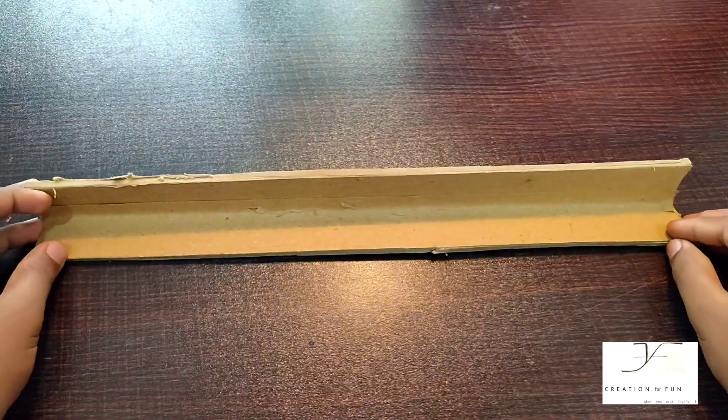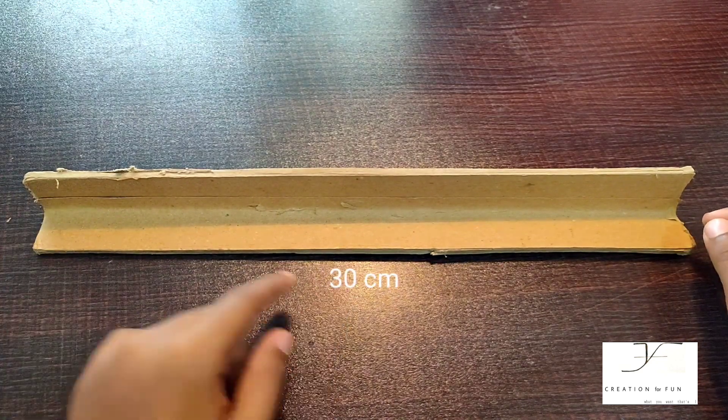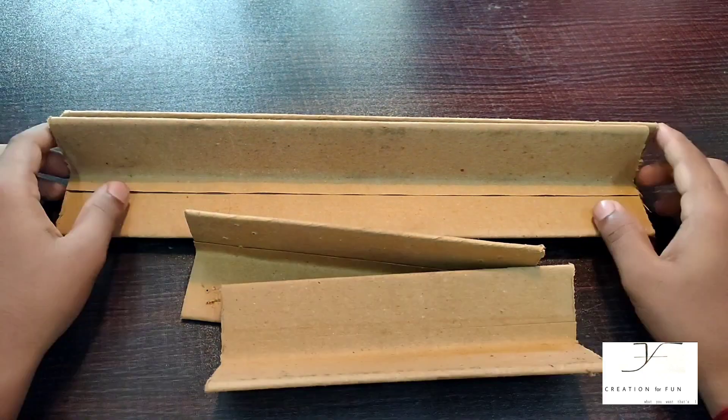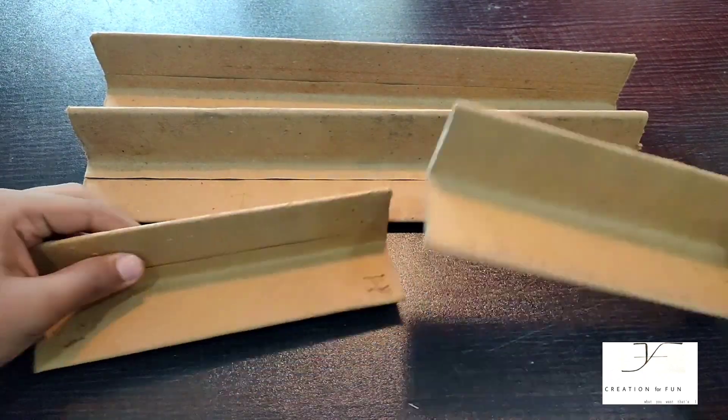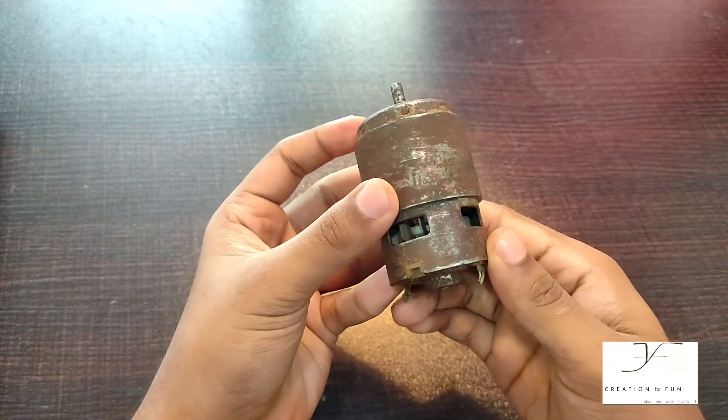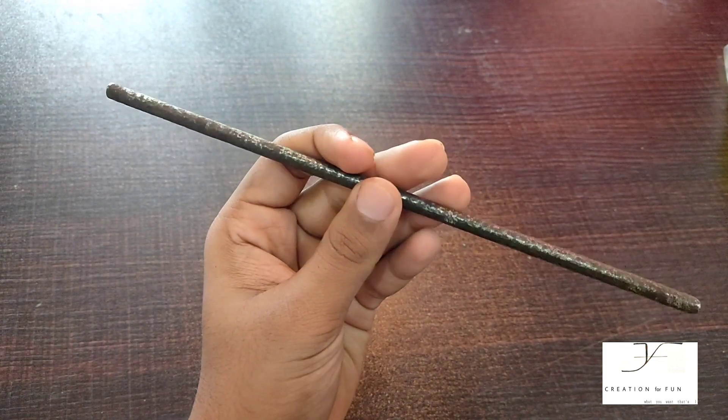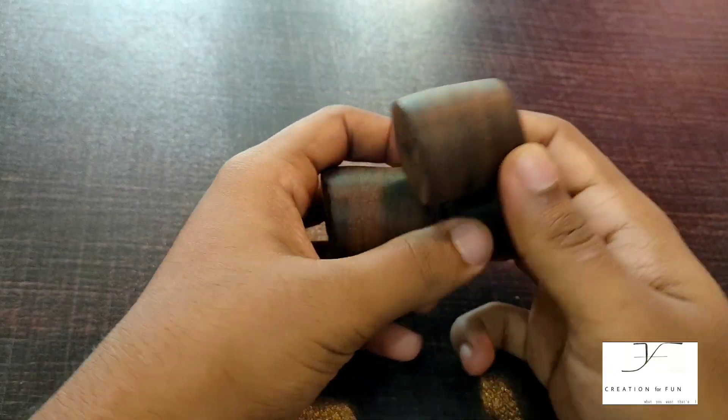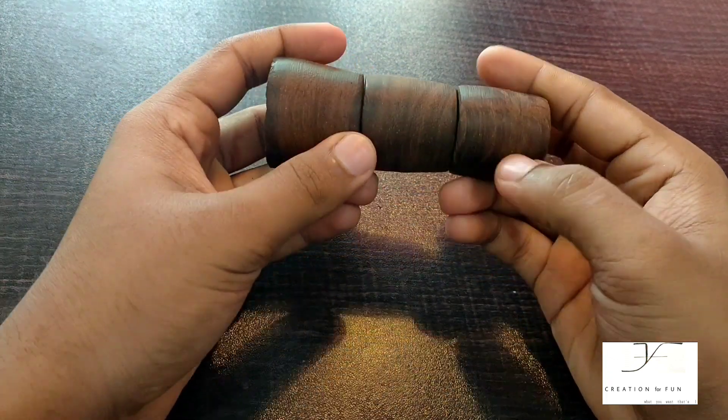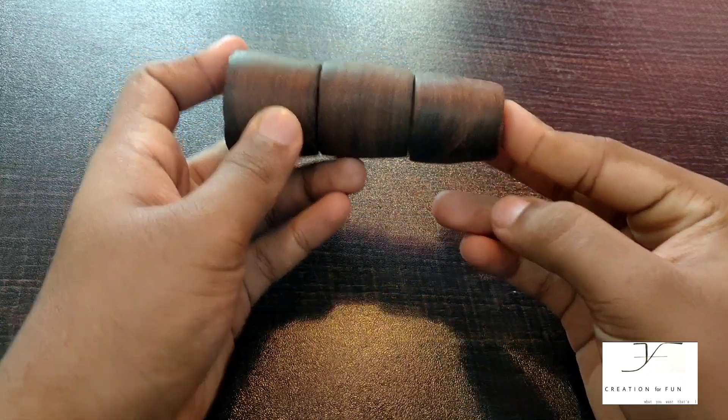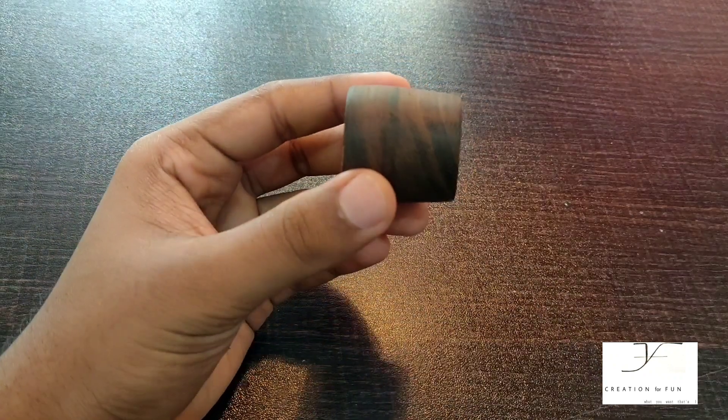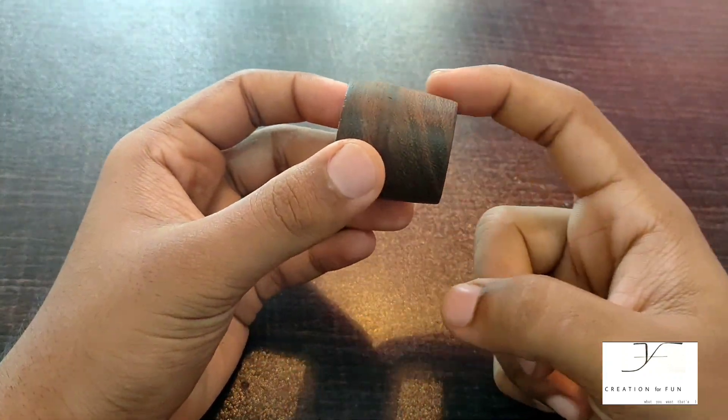We cut L-shaped cardboard pieces and four more pieces for the structure and strength. We need a DC motor and bamboo stick. We cut three cylindrical shapes and some hexagon shapes. All measurements are available in the description.